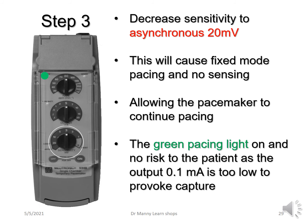In step three, you decrease the sensitivity — the third dial — turning it all the way around to asynchronous, past 20 millivolts. This causes fixed mode pacing with no sensing, allowing the pacemaker to pace continually. You're not concerned about asynchronous pacing because the patient is in their inherent rhythm. The green pacing light will still flash because the output is at 0.1 milliamp — too low to provoke capture of the myocardium — but pacing will continue.